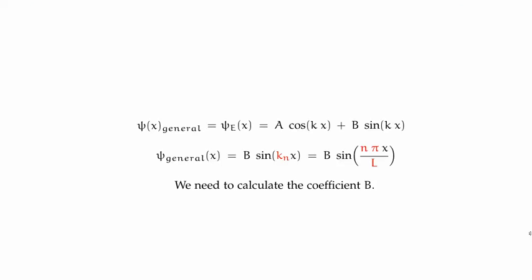We have now calculated the wave function for a particle living in our infinite potential well. We started with the general solution to the time-independent Schrödinger equation, plugged in the boundary conditions which said that A was 0, then calculated the second boundary condition which gave us that k sub n equals n pi over L. Now we need to calculate the constant B, and we're going to do that in the next section.